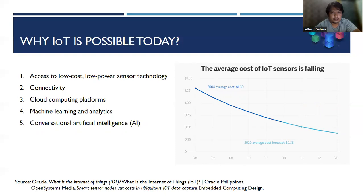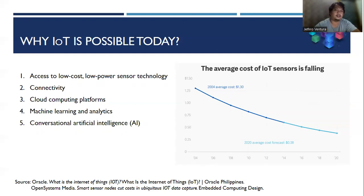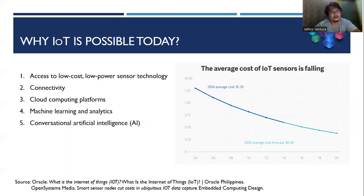Next is connectivity. A host of network protocols for the Internet has made it easy to connect sensors to the cloud and other things for efficient data transfer. Since almost all of our devices are already connected to the Internet, that also makes it an easier pathway for IoT.